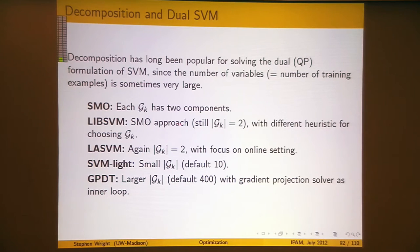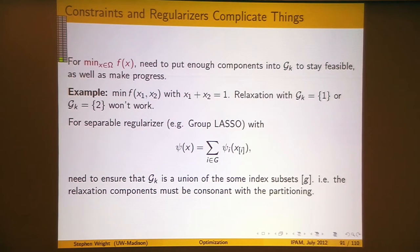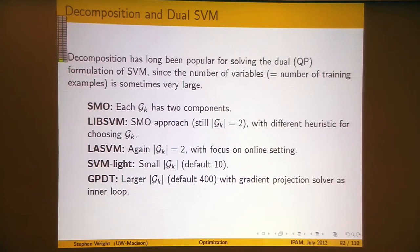The SMO method deals with that single linear constraint by allowing two elements of x to change at each iteration. The reason it's two instead of one is to overcome exactly the problem I showed on the previous slide: if you're allowed to change two components, you can change them both while still satisfying the constraint, as long as the change in x1 is the negative of the change in x2. So in SMO, two components change in a way that the change in one cancels out the change in the other, and you're still able to satisfy the constraint.